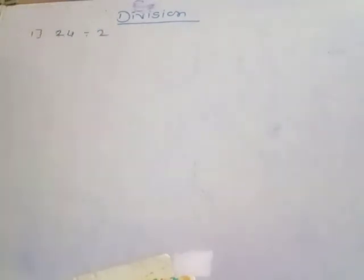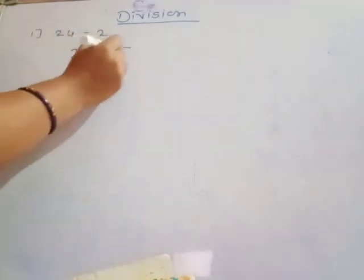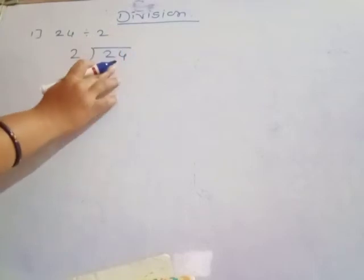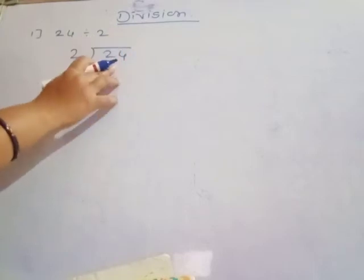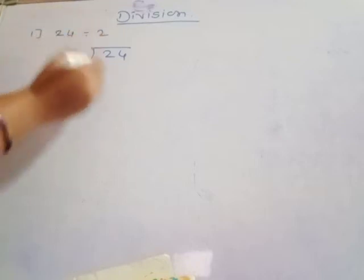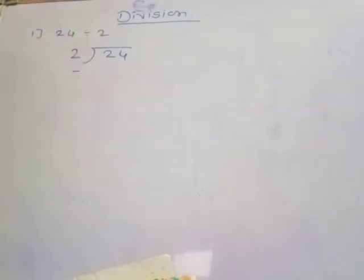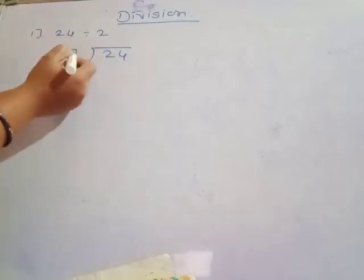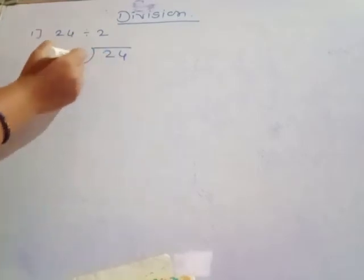Example one: 24 divided by 2. Here 24 is the two-digit number dividend, and 2 is the one-digit number divisor. You divide here one by one number — firstly the ten's place number, then the unit's place number, using the two times table.